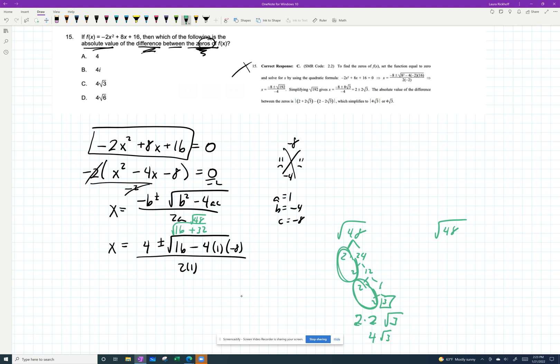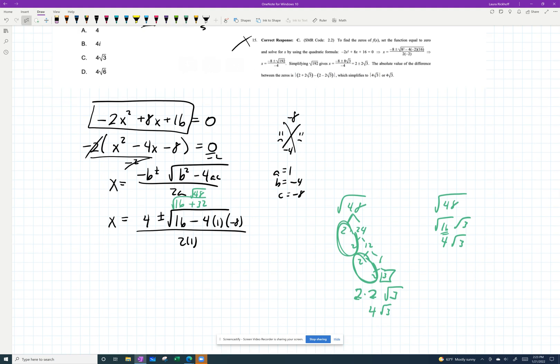Others might see, my teachers always saw, hey, 48 is 16 times 3. So in 16, they're looking for divisibility by perfect squares. So root 16 times root 3 is 4 root 3. So however you get there, you get 4 plus or minus 4 root 3 all over 2.